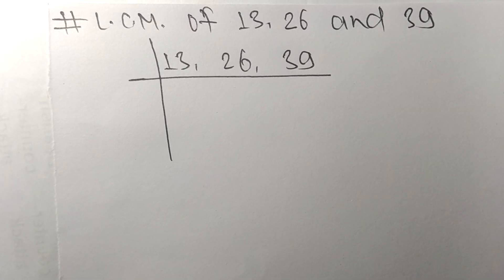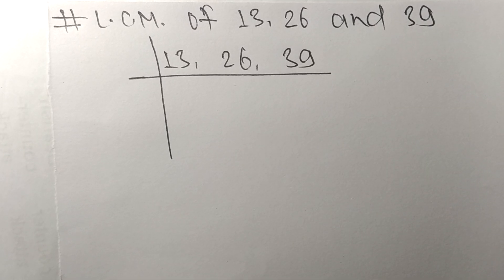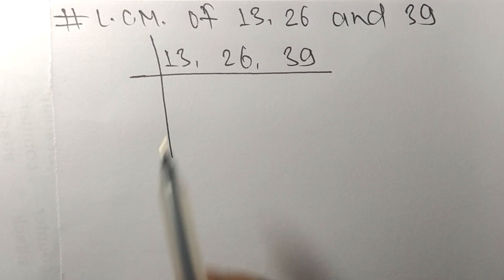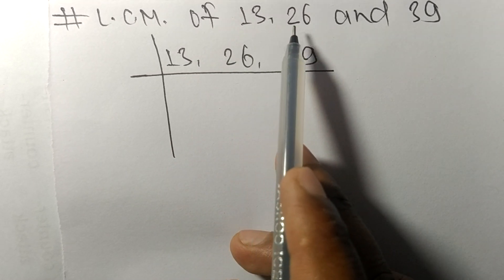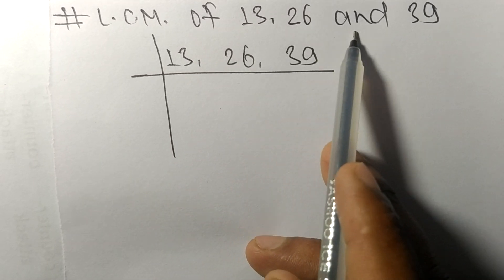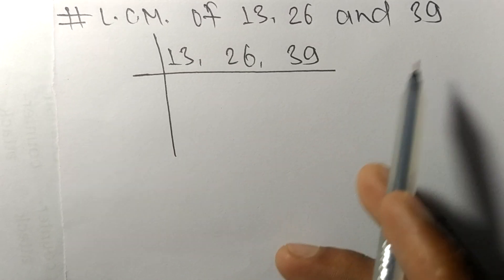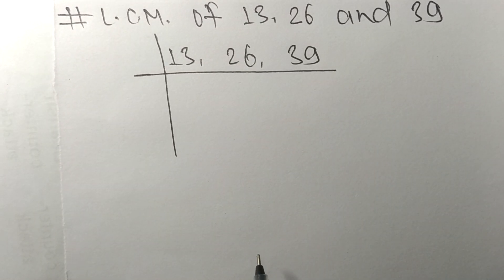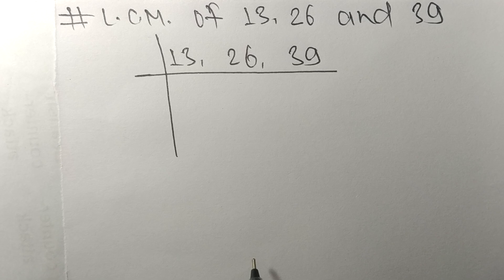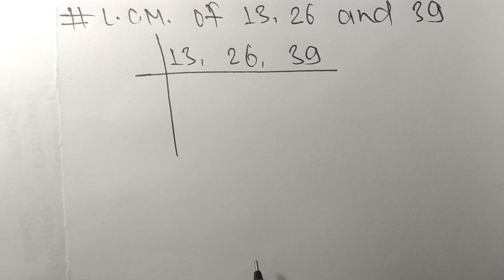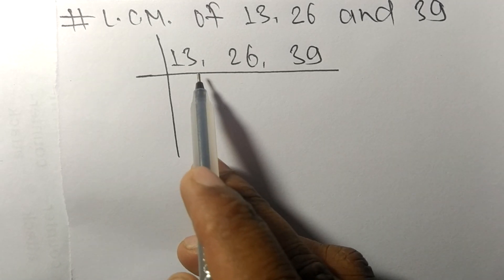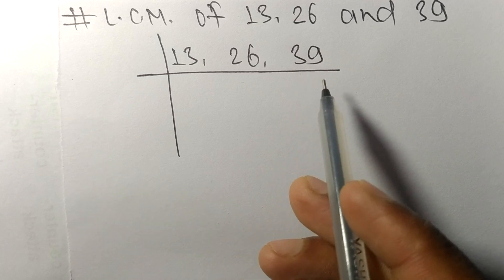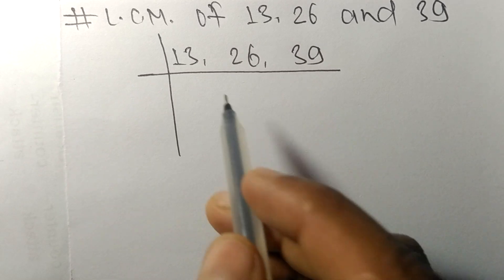Today in this video we shall learn to find the LCM of 13, 26, and 39. To find the LCM, we have to choose the lowest number that can exactly divide at least any two of these numbers.